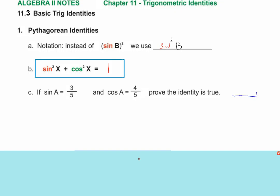I'm just using a 3-4-5 triangle. If angle A is there, with sides 3, 4, and 5, then the sine is opposite over hypotenuse — 3 fifths — and the cosine is adjacent over hypotenuse — 4 fifths. So if the identity is true, then 3 fifths squared plus 4 fifths squared should equal one.